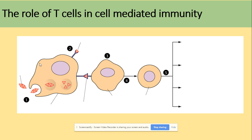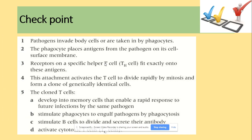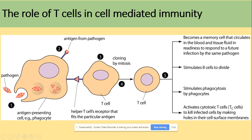Let's look at what happens step by step. Number one is the pathogen — an organism that causes disease. On the surface of this pathogen we find antigens. An antigen-presenting cell, such as a phagocyte, macrophage, or B cell, will engulf the pathogen and present its antigens on the surface. T cells only respond to antigens already presented on antigen-presenting cells.